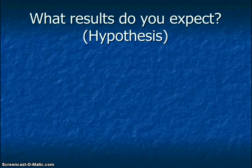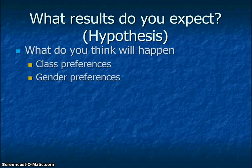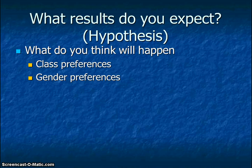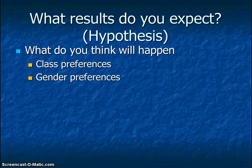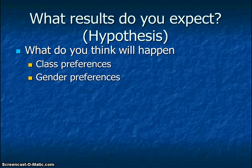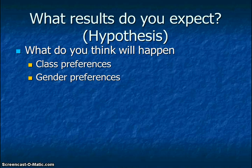So now you have your question, you want to write your hypothesis. This is the result you think you're going to get based on who you're going to survey in class. You want to write down what you think your result is going to be. You can talk about overall class preferences — for instance, if you survey 20 different people, you think that a certain number or percentage are going to have a preference for one flavor. Or maybe you think guys are going to prefer one flavor and girls are going to prefer another.